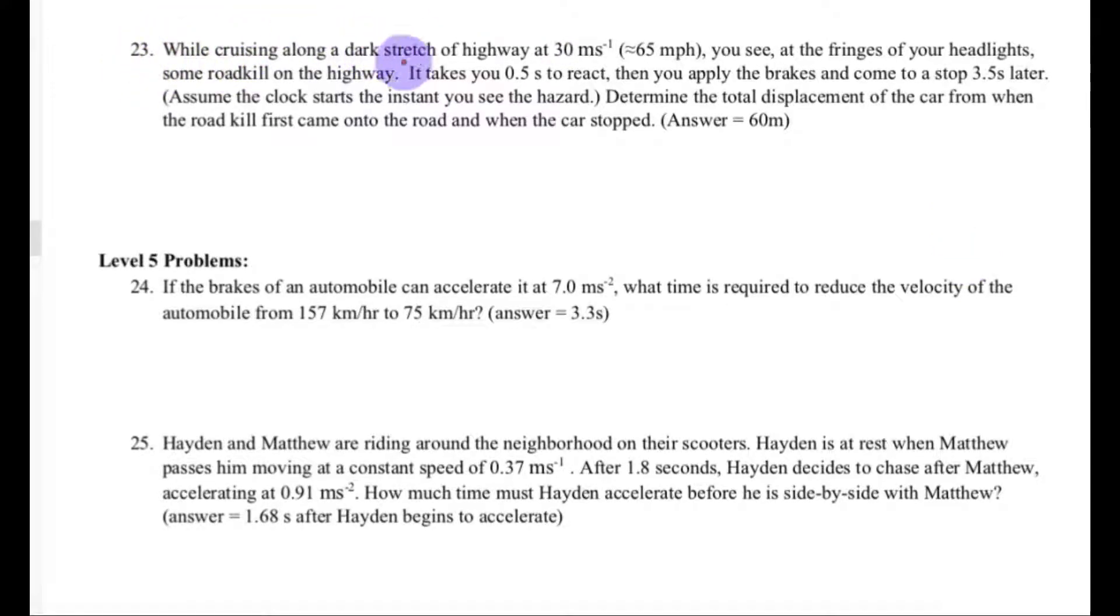Number 23: while cruising along a dark stretch of highway at 30 meters per second, you see at the fringes of your headlights some roadkill on the highway. It takes you 0.5 seconds to react, then you apply the brakes and come to a stop 3.5 seconds later. Determine the total displacement of the car from when the roadkill first came into the road and when the car stopped.